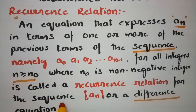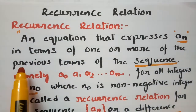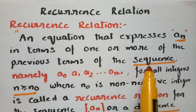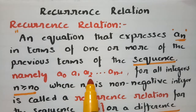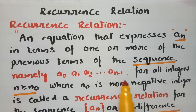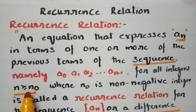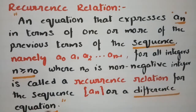Simply put, Aₙ is expressed in terms of one or more of the previous terms of the sequence — namely A0, A1, A2, and so on up to Aₙ₋₁ — for all integers where n is greater than or equal to n0, where n0 is a non-negative positive integer. This is called a recurrence relation for the sequence Aₙ, or a difference equation.